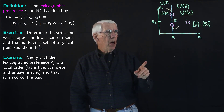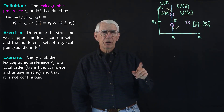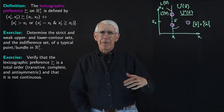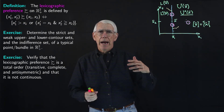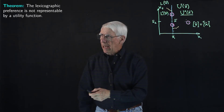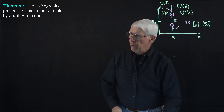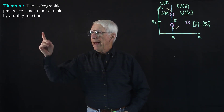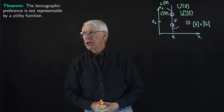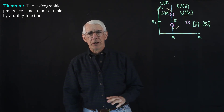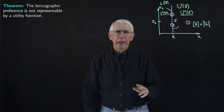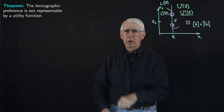Now we'll take a little break before we come back for the second half of the lecture and prove the theorem that says the lexicographic preference is not representable by a utility function. So we'll take a little break here and then come back and do that proof.